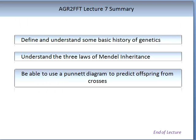To summarise: in this lecture you should now be able to define and understand some basic history of genetics, describe and understand the laws of Mendelian inheritance, and use a simple Punnett diagram to predict offspring from your crosses. This is the start of any good breeding program. This brings us to the end of this lecture.